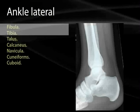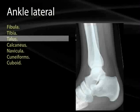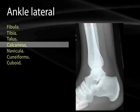On the lateral view you can see the same structures, though the fibula overlays the tibia. This view gives a much better look at the talus and is used to measure subtalar fractures or fractures through the neck of the talus. The narrow portion of the talus just before it articulates with the navicular bone is susceptible to fractures.